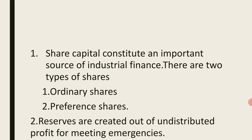The first source is share capital. The second one is reserves, which are created out of undistributed profit for meeting emergencies. The company creates reserves out of undistributed profit to meet unforeseen conditions — that means emergencies such as fire, theft, or whatever it may be.